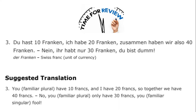Moving to the third sentence: 'Du hast zehn Franken, ich habe zwanzig Franken, zusammen haben wir also vierzig Franken. Nein, ich habe nur dreißig Franken. Du bist dumm.' This is a simple sentence where somebody has failed to do basic mathematics — 10 plus 20 is 30, not 40. It also shows the different verb forms depending on personal pronoun: 'du hast,' 'ich habe,' 'zusammen haben wir.' Someone else corrects them: they have 30 francs together.